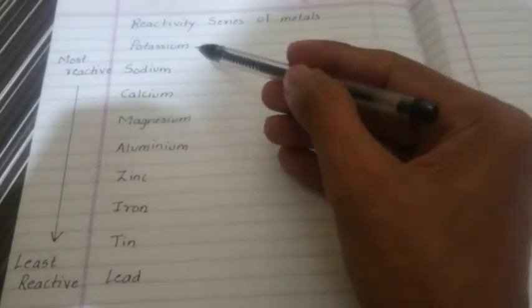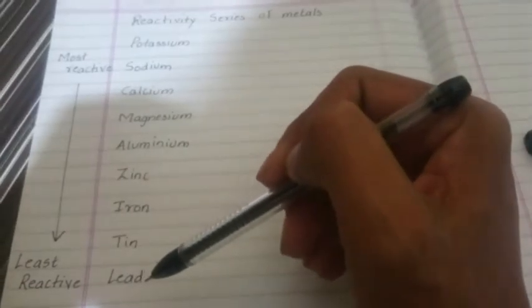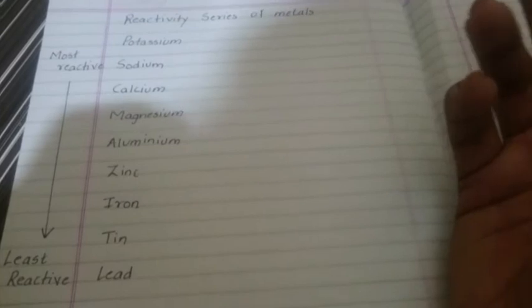From potassium which is the most reactive to lead which is the least reactive. There are much more after lead, but they're not so important. So here's how it goes. The trick to remember is a simple sentence. We'll write each word one below the other.